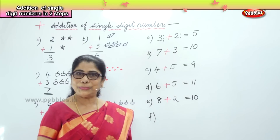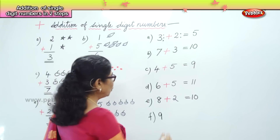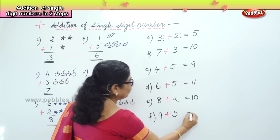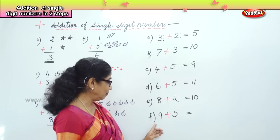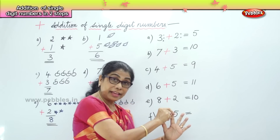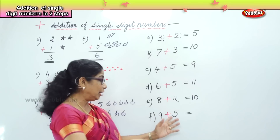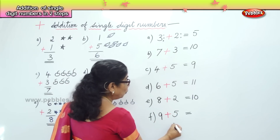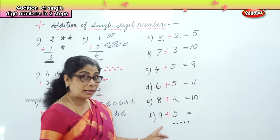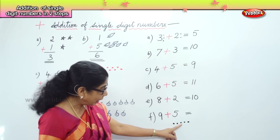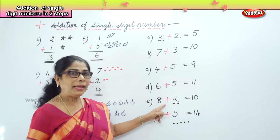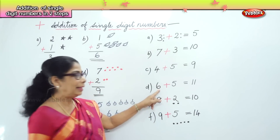One last number for you — a big number: 9 plus 5. What is 9 plus 5? Put the big number 9 in your mind and hold up 5 fingers. After 9: 10, 11, 12, 13, and 14. So 9 plus 5 equals 14.